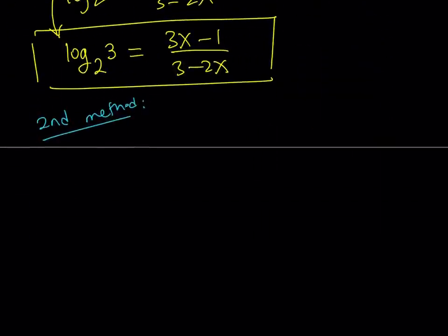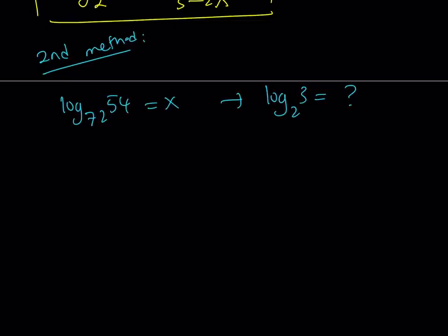So let's go ahead and take a look at the original problem again. We're given that log base 72 of 54 is equal to x and from here we're supposed to find log base 2 of 3 in terms of x. Now here's what I'm going to do. I'm going to use the definition of logarithms.